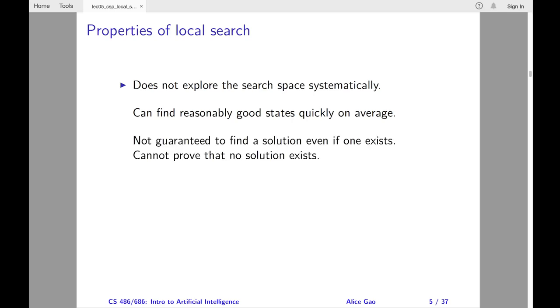The downside of this design choice is that local search is not guaranteed to find a solution, even if a solution exists. Furthermore, it cannot be used to prove that no solution exists. Therefore, we often use local search when we know that a solution exists for sure, or a solution very likely exists.